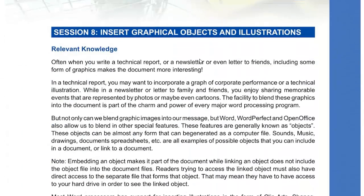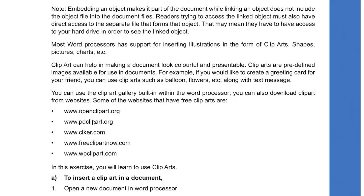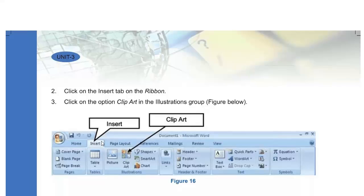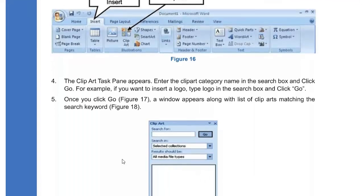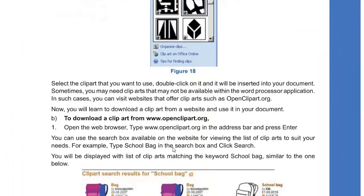Now we have inserting graphical objects or illustrations — how you can actually insert graphics and images into your document. Some websites are provided from where you can download cliparts. Cliparts are the vector form of images provided in MS Office. To use clipart, go to Insert > Clipart in the document, open the document, click on the Insert tab in the ribbon, click on Clipart, select the clipart you want, click on it, and it is ready to be used in your document.